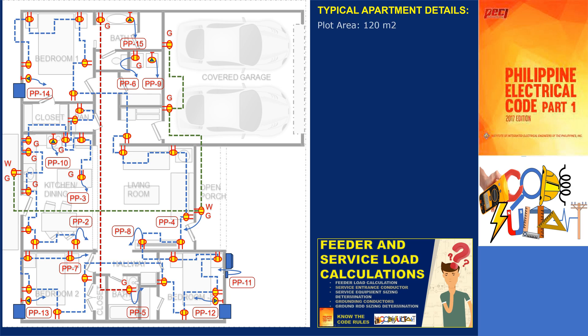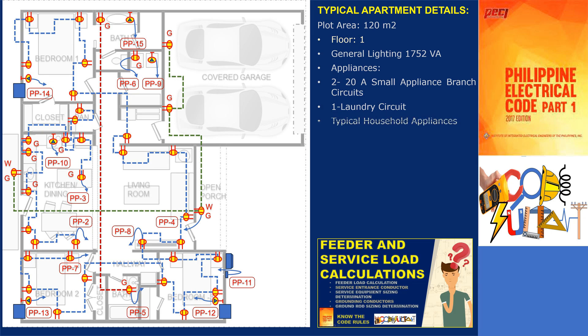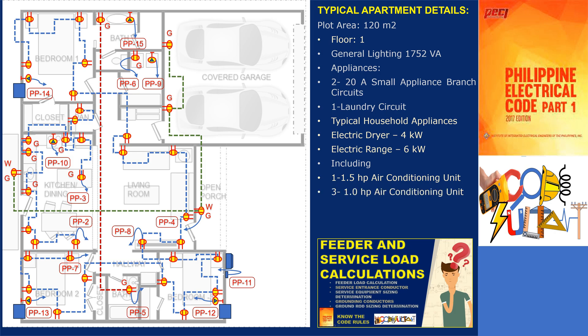Each typical apartment has a plot area of 120 square meters. Based on the calculations from the previous videos, the load breakdown is as follows: general lighting, 1,752 volt amperes, which includes receptacle outlets in general areas, bathroom circuits, garage circuits, and lighting loads; small appliance branch circuits, two circuits at 1,500 volt amperes each; laundry circuits, 1,500 volt amperes; electric clothes dryer, 5,000 volt amperes; electrical cooking range, 6,000 volt amperes; split type air conditioning unit, 1.5 horsepower; room air conditioning units, 3 units at 1.0 horsepower each; storage water heater, 4.5 kilowatts; and booster pump, 1.5 horsepower.